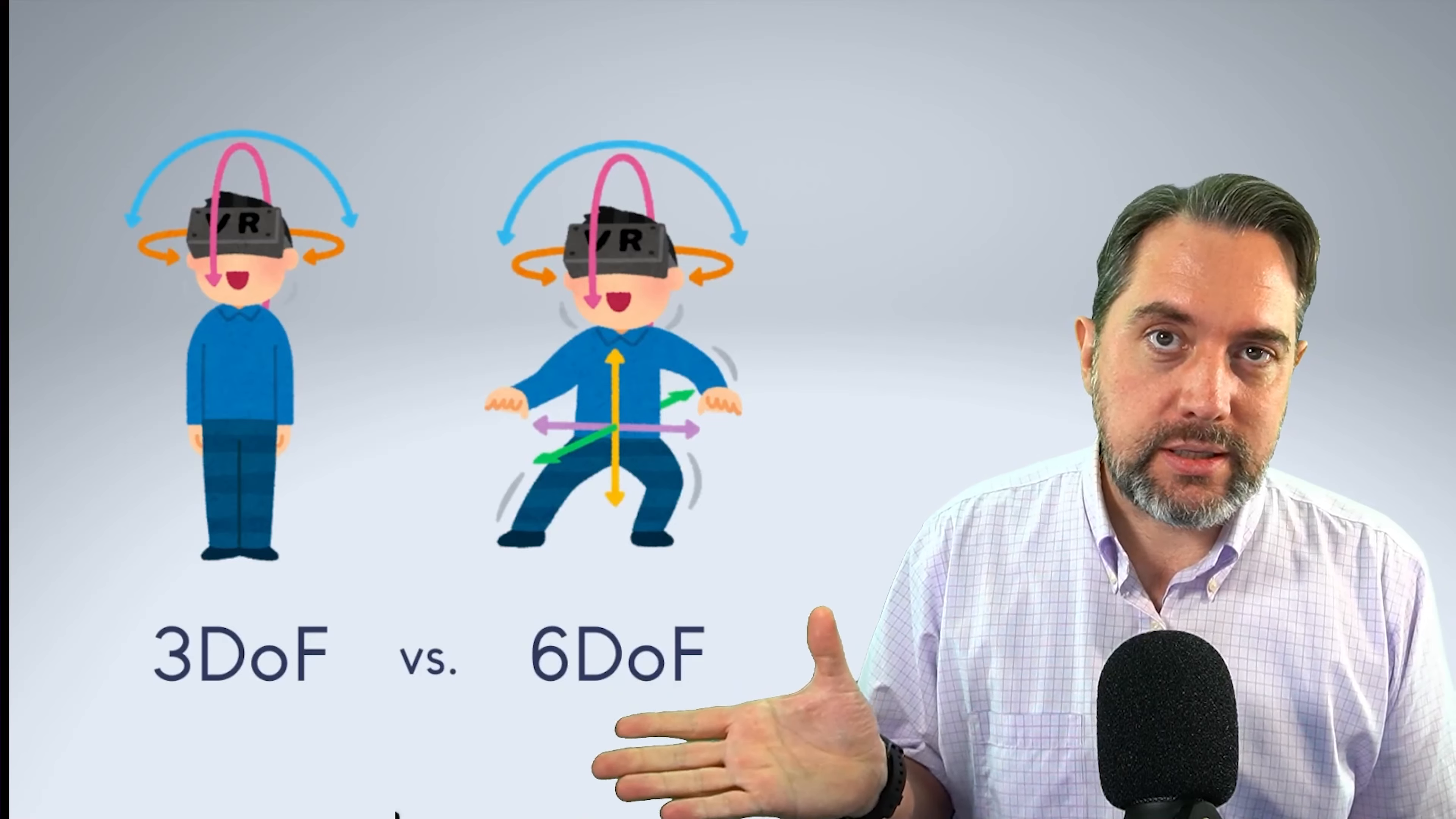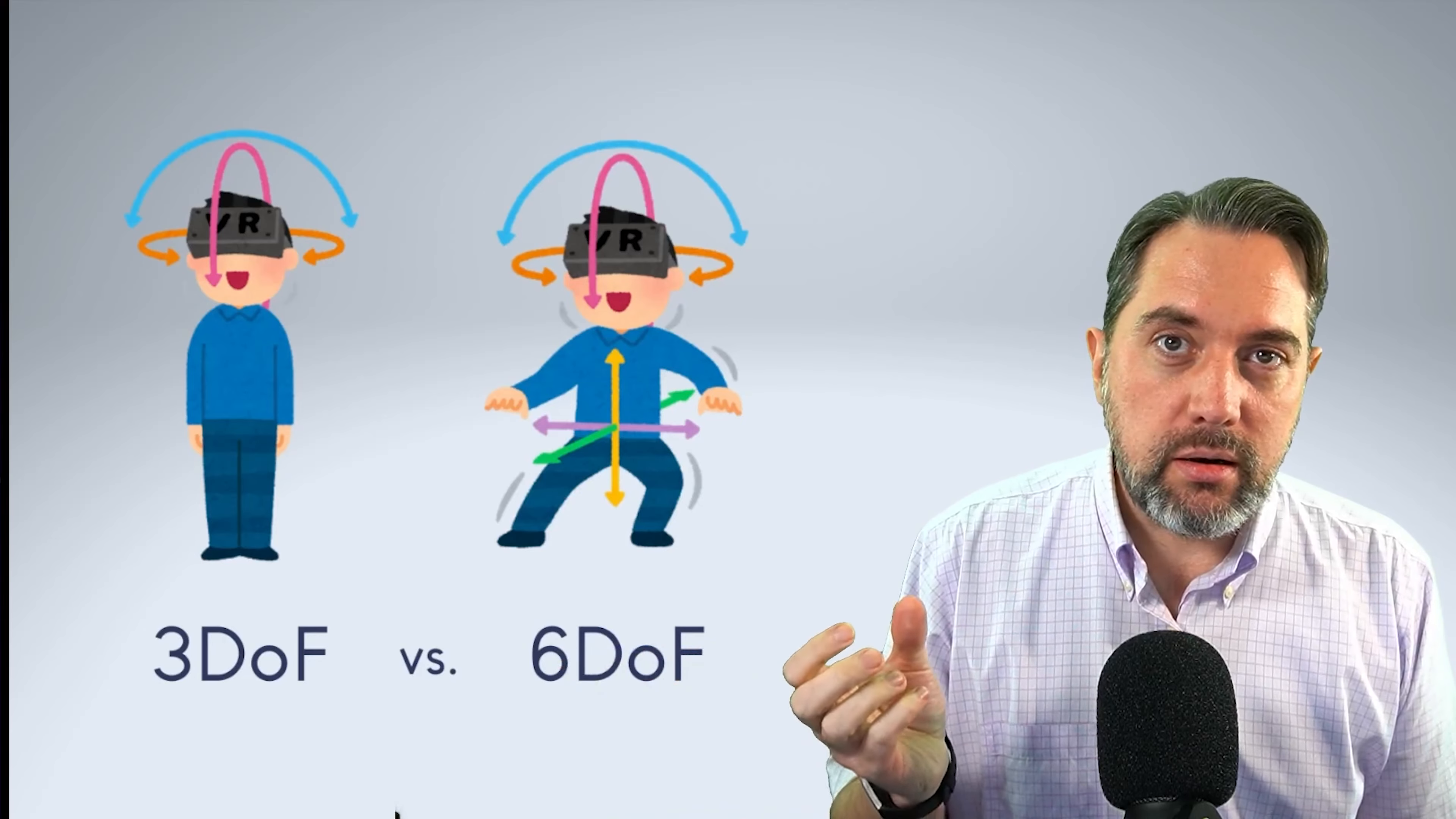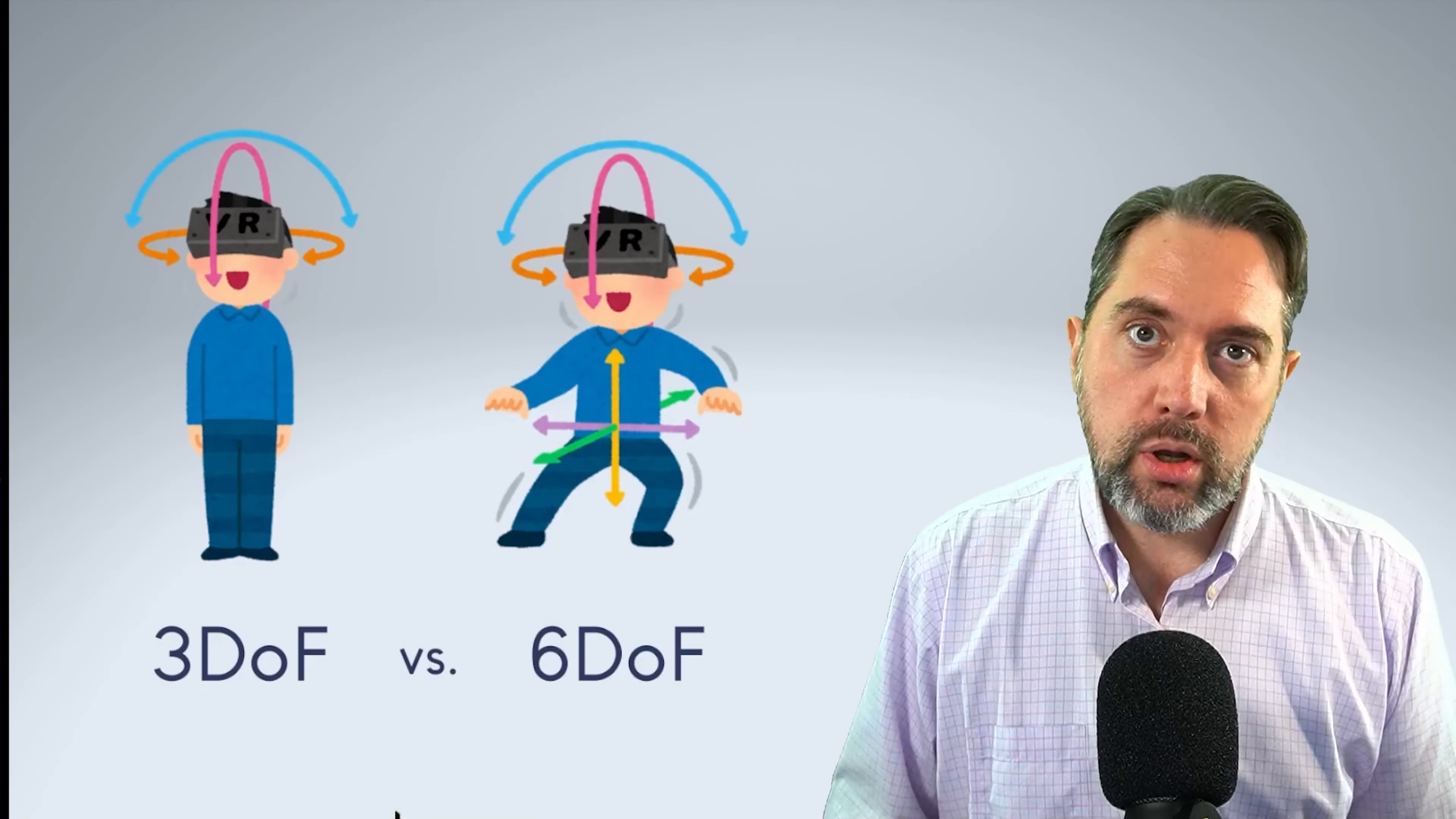So there's two different main versions of this. One is 3-DOF and 6-DOF. Three degrees of freedom and six degrees of freedom. And the study that we're sharing today is doing the six degrees of freedom, but they both take in this head tracking movement around you. So three degrees of freedom just tracks your head, your stationary. The pitch, yaw, and roll of your head.